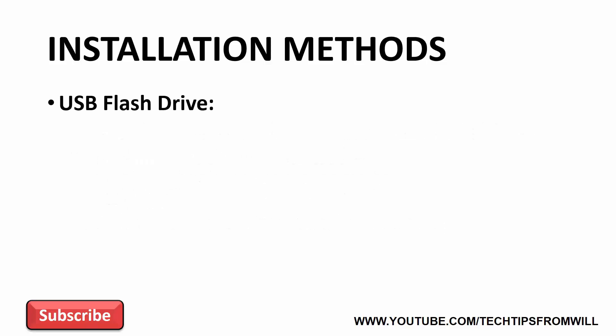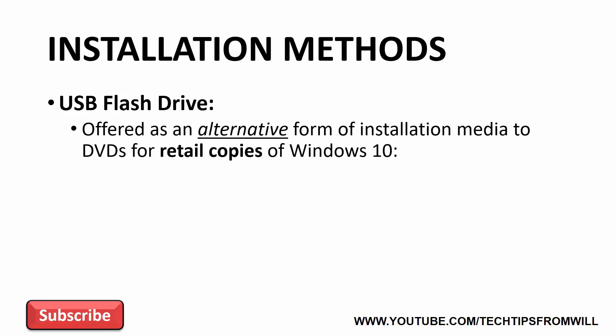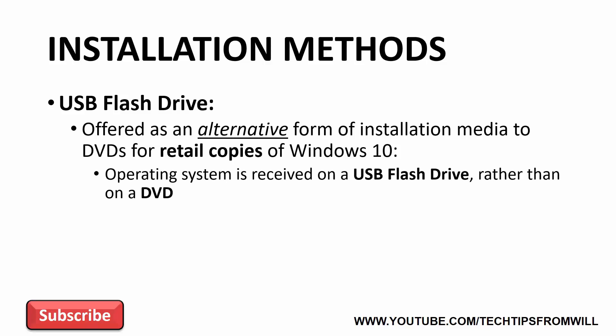This brings us to the next install method: using a USB flash drive. Starting with Windows 10, Microsoft has started to offer USB flash drives as an alternative form of installation media when you purchase a retail copy of Windows 10. When you purchase Windows 10 off the shelf, if you pay a little extra, you'll receive the operating system on a USB flash drive rather than on a DVD.